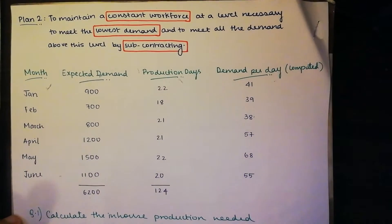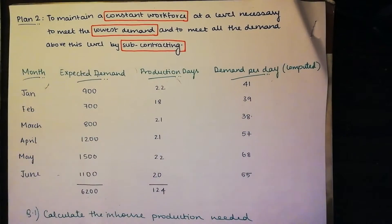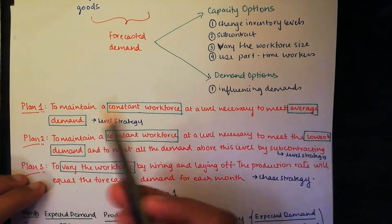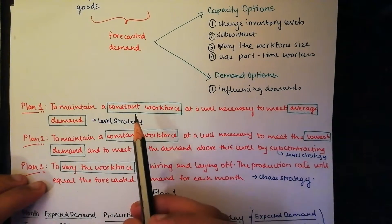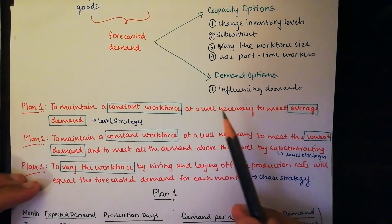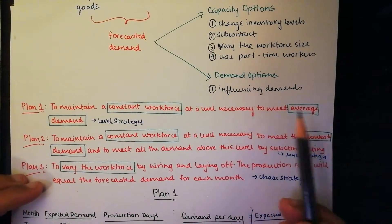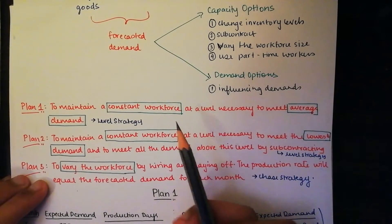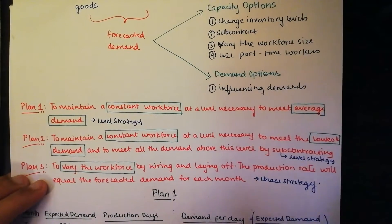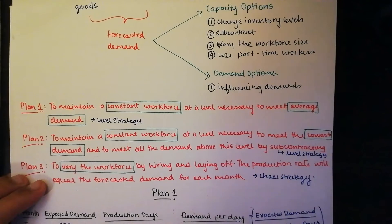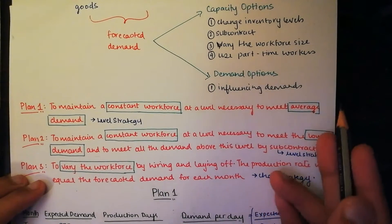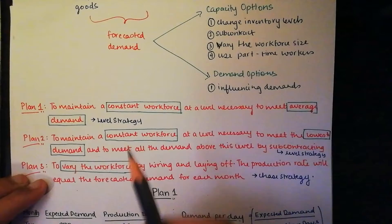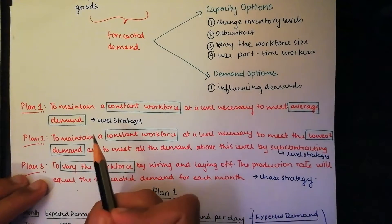What does Plan 1 say? Plan 1 says we need to find and maintain a constant workforce at a level necessary to meet the average demand, which is a level strategy. We had to find two main things: the average demand and the number of workforce, which is constant, to meet this average demand.